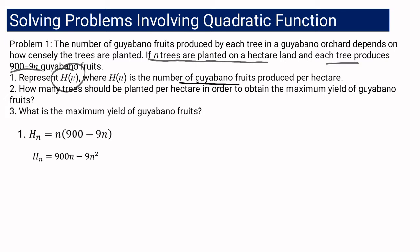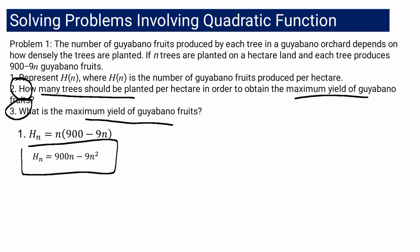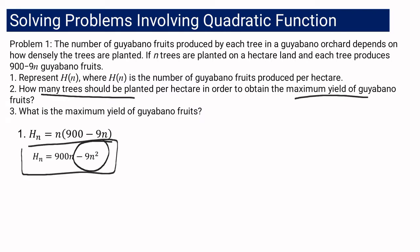So the number of guayabano fruits produced per hectare is represented by the function H of N equals 900n minus 9n squared. For question number 2, you are asked how many trees must be planted to obtain the maximum yield. For question 3, what is the maximum yield of guayabano fruits? Since our quadratic term is negative 9n squared, the value of A is less than 0, which means the graph opens downward.